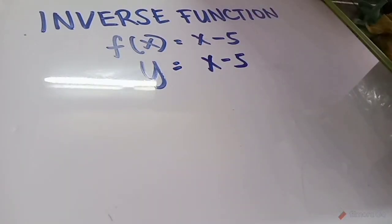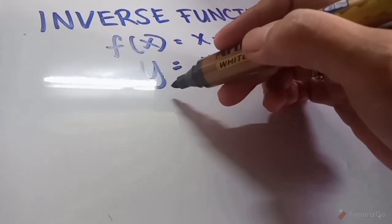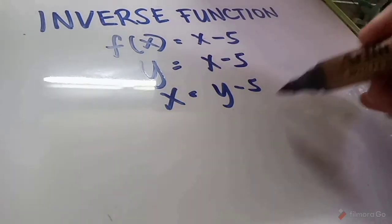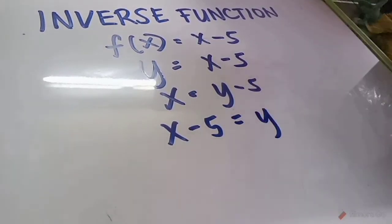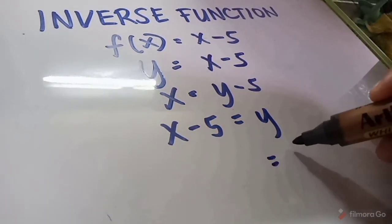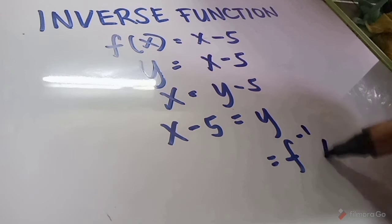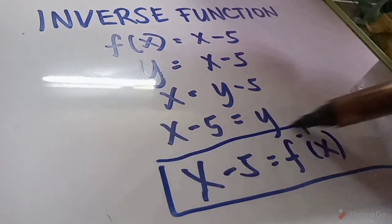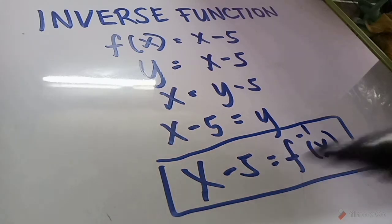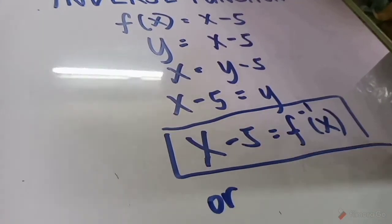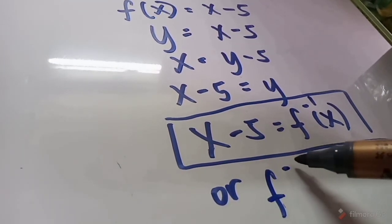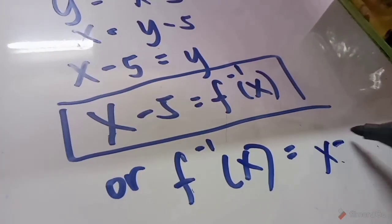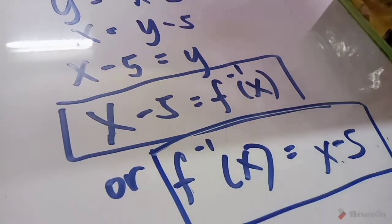Step 2: Switch x and y, so we get x = y − 5. Then transpose to get y = x + 5. Step 3: Replace y with the inverse function notation. Therefore, f⁻¹(x) = x + 5. This is the final answer.